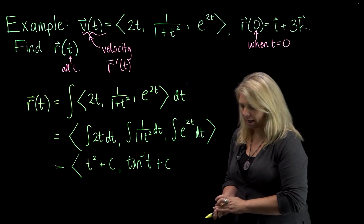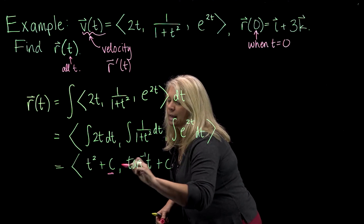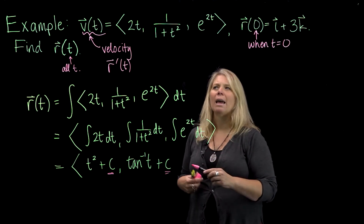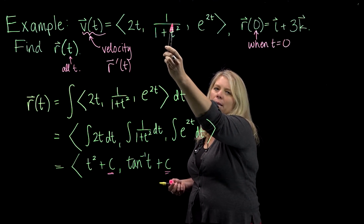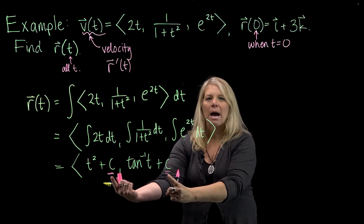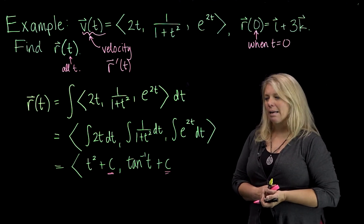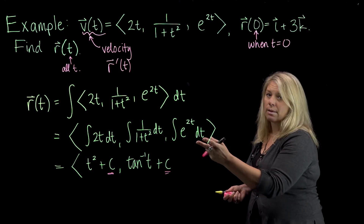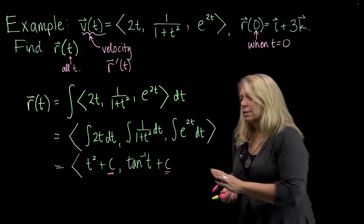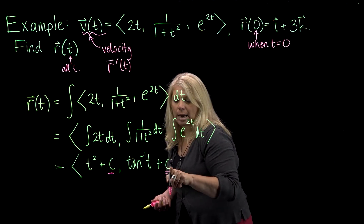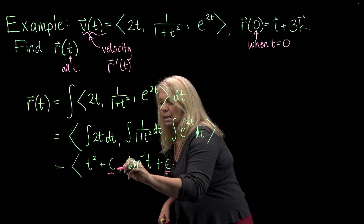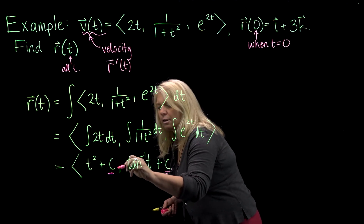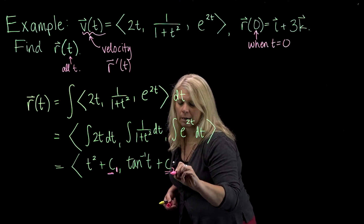But pay attention to the fact that this c is in the i component of the vector, and this c is in the j component. Just as you can't combine 2t and 1 plus t squared, you can't combine these into a single plus c at the end. You have a different c in each component. I tend to use subscripts — c1, c2, c3 — or different letters, to distinguish between them.